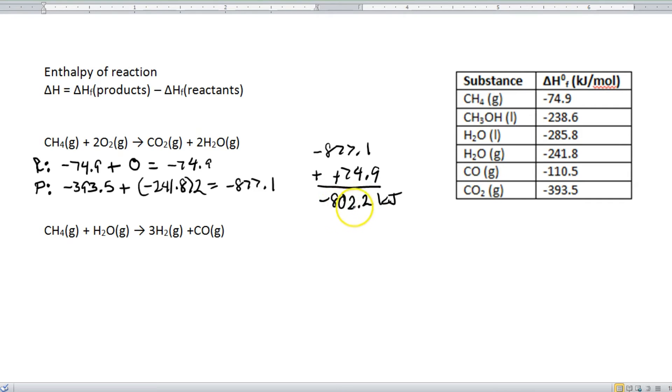We now need to identify whether this is endo or exothermic. It is a negative number. Therefore, it is an exothermic reaction. And step number four is to rewrite this equation with the energy. Since this is an exothermic reaction, we are going to put the energy as a product.